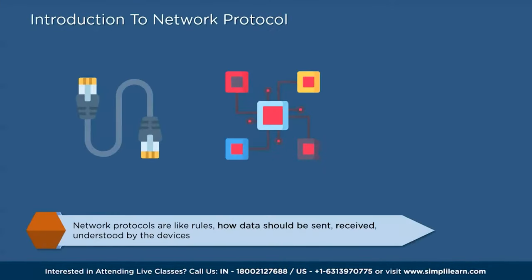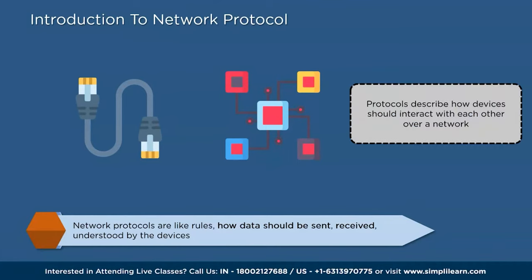A network protocol is like a set of rules that govern how devices in a network communicate with each other. These rules are like instructions that specify how data should be sent, received, and understood by the devices. Network protocols are formalized requirements and plans that consist of rules and procedures describing how devices should interact with each other over a network. They provide a communication system to exchange information using various physical means such as cables or wireless connections.